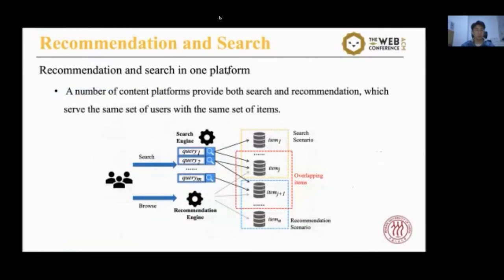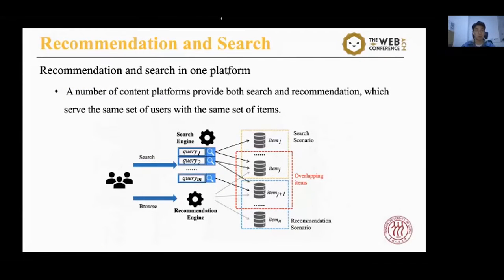In this work, we focus on using search data to facilitate recommendation models. In recent years, a large number of content platforms provide both search and recommendation services, which serve the same set of users with the same set of items. As shown in this figure, users often use recommendation and search simultaneously. In the search scenario, users issue queries and click returned items. In the recommendation scenario, users browse returned items. There exist overlapping items in both services, which provides us a chance to improve recommendation performance using search data.